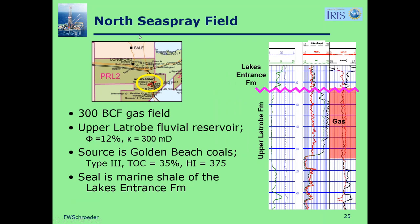The North Sea Spray Field — that's onshore with 300 billion cubic feet of gas. The reservoir is upper Latrobe fluvial sand with a porosity of 12% and a permeability of 300 millidarcies. The source for this gas is Golden Beach coals — type 3 organic matter, 35% total organic carbon, hydrogen index of 375. The seal is the Lake Entrance Formation. Here's a representative log showing where the unconformity is, the Lake Entrance Formation above it, the upper Latrobe below it, and this is the interval containing the gas.